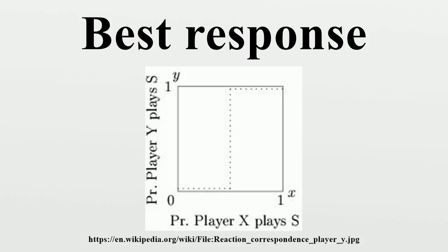To show the Nash equilibria at the points where the two players' best responses agree in Figure 3, there are three distinctive reaction correspondence shapes — one for each of the three types of symmetric 2x2 games: coordination games, anti-coordination games, and games with dominated strategies. Any payoff symmetric 2x2 game will take one of these three forms.